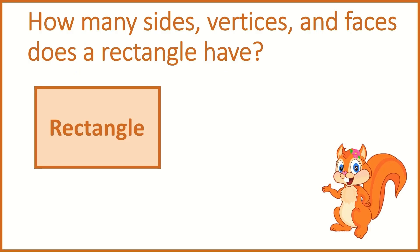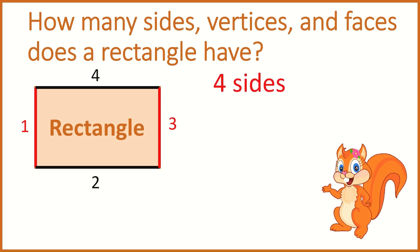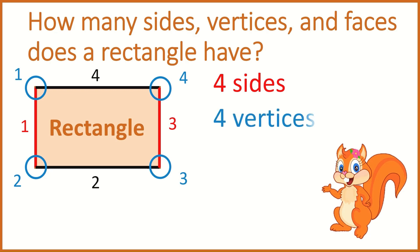How many sides, vertices, and faces does a rectangle have? Let's count the sides together. One, two, three, four. A rectangle has four sides. Not all of the sides are the same size — each opposite side is the same. Let's count the vertices. One, two, three, four. A rectangle has four vertices. How many faces does a rectangle have? A rectangle is a 2D shape. That means it has one face.